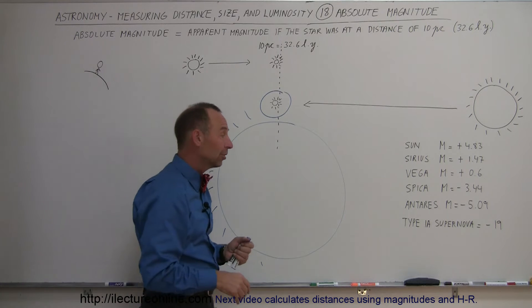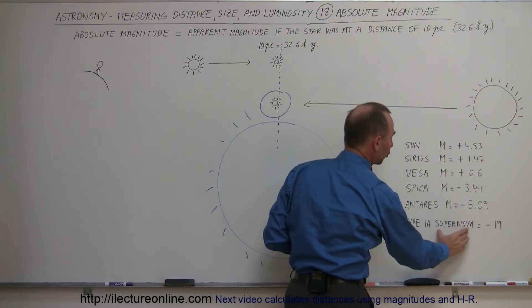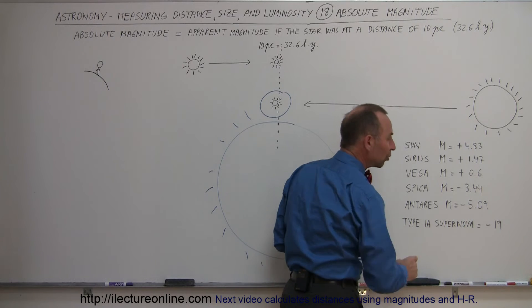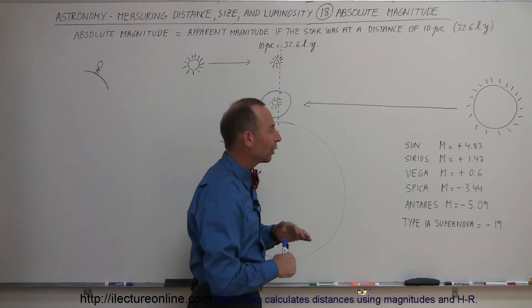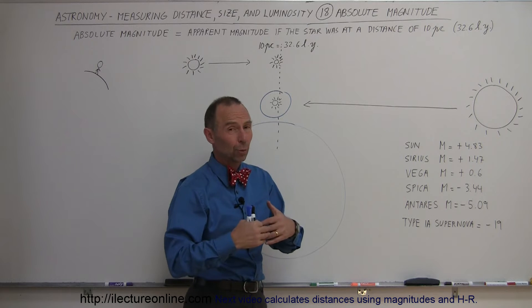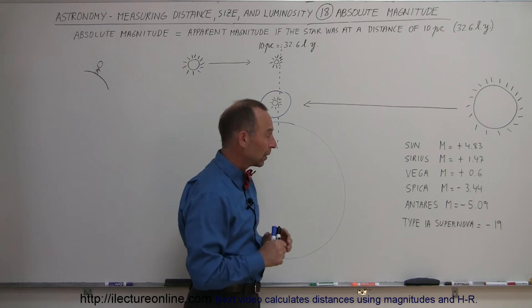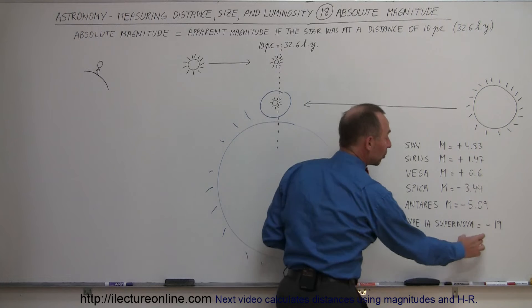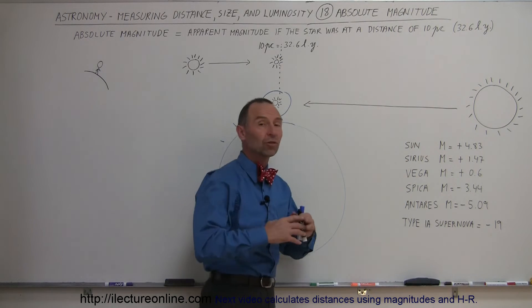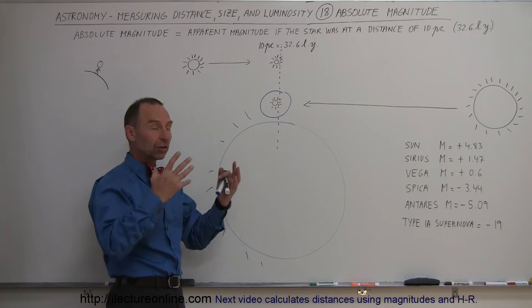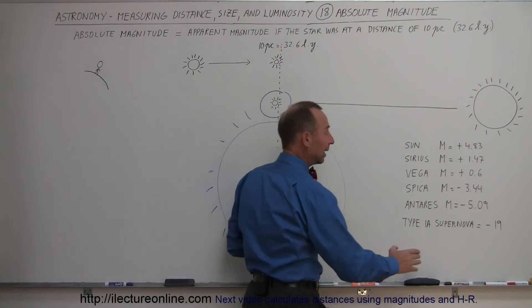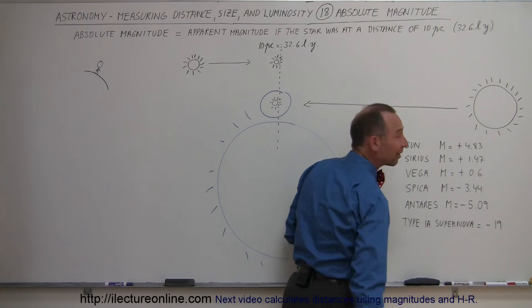And then, as a final comparison, take a look at how bright a supernova is, a type 1a supernova. You may not know yet what a type 1a supernova is. It's actually a white dwarf that explodes. But we'll get into that in a later video. But notice the brightness of one of those explosions. When a star explodes in a supernova explosion, at that time, it has an absolute magnitude of minus 19.